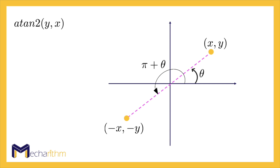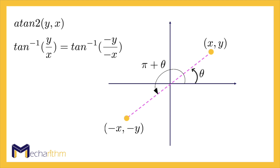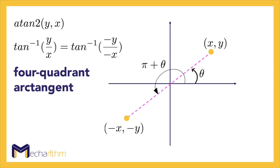Atan2(y, x) is a two-argument function that is similar to arctangent. But the difference is that since the arctangent of y over x is the same as the arctangent of minus y over minus x, arctangent only returns angles in the range minus π/2 and π/2. But atan2(y, x) returns angles in the range minus π and π, and thus it's called a four-quadrant arctangent. In other words, arctangent doesn't differentiate between angles in the first and third quadrant, and in robotics we prefer the four-quadrant arctangent to make the quadrant in which the angle lies more clear.